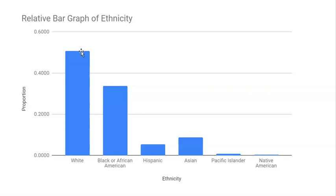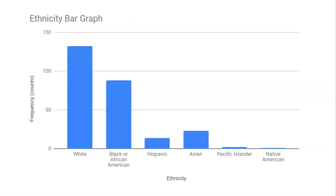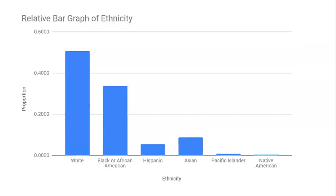Comparing the frequency bar graph to the relative frequency bar graph, they convey very similar information. The only difference is whether it shows the proportion or shows the count. Many features remain the same: the heights are the differentiating factor, not the widths, and there are still equal gaps between the different bars.